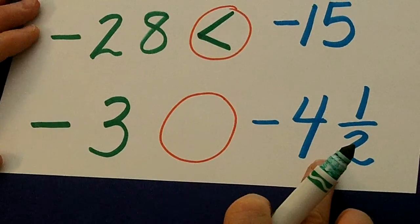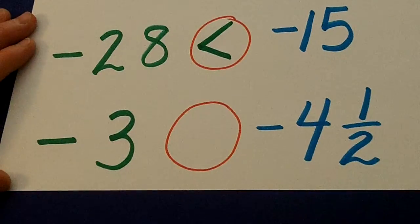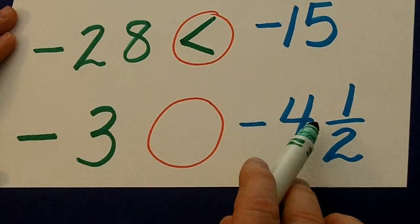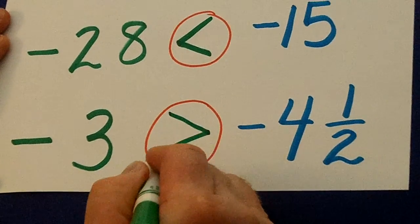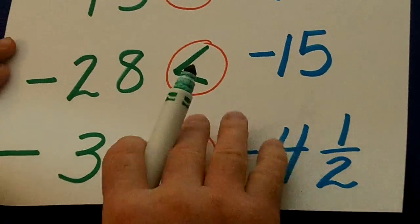We got a plus, we got a little half sign here, a little fraction. So the negative 4, that's colder than the negative 3. So this is smaller.